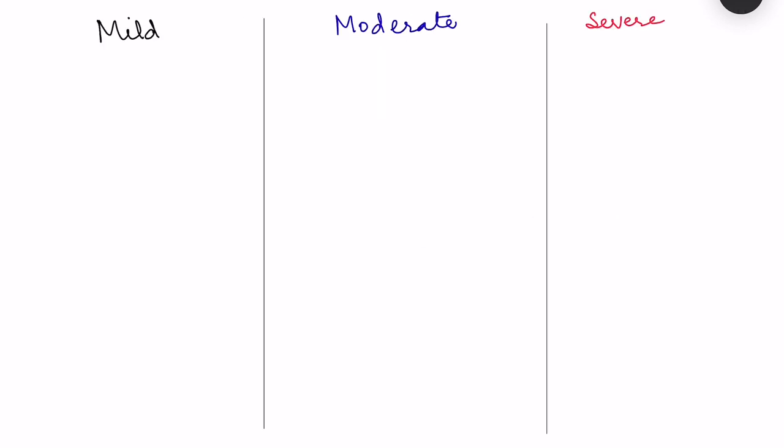In the mild stage, the signs and symptoms are basically related to the body's responses to hypothermia — the body is trying to correct it. While in moderate and severe stages, there is progressive decrease in body temperature causing depression of various body systems, leading to deteriorating signs. We will discuss each system one by one.